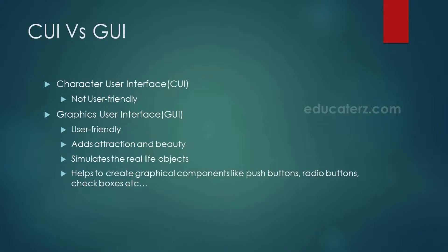Then came GUI, where the user need not remember any commands but can interact with any application by clicking on images or graphics. For example, if the user wants to print a file, he can click on a printer image and the rest will be taken care of by the application. The user just needs to specify copies or orientation — landscape or portrait. He need not remember any commands; he just uses images. The environment where the user can interact through graphics or images is called GUI — Graphical User Interface.